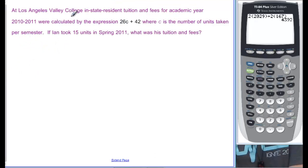At Los Angeles Valley College, in-state resident tuition and fees for academic year 2010-2011 were calculated by this expression: 26C plus 42, where C is the number of units taken per semester. If Ian took 15 units in spring 2011, what was his tuition and fees? This 15, we have to decide what it means. C is the number of units taken, and they just told us that Ian took 15 units. So C is going to be equal to 15.